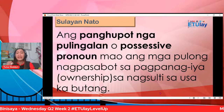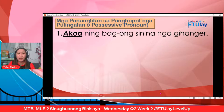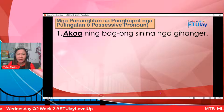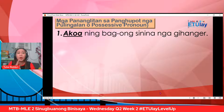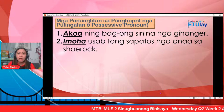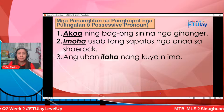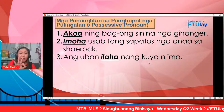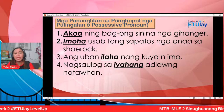Mga pananglitan sa panghupot nga pulingan o possessive pronoun: number one — ako aning bag-ong sinina nga gihanger — kanang gilinyahan, ako ah, kung sana ka pananglitan. Number two — imuha usab tong sapatos nga naa sa show rock. Imuha is an example o pananglitan sa panghupot nga pulingan o possessive pronoun. Ikatulo: ang uban, ilaha ng kuya nimo. Ang pulo nga ilaha — ikatulo nga pananglitan. Ikaupat: iyahang nagsaulog sa iyahang adlaong natawhan. Ang pulo nga iyahang, isa ka pananglitan. Ikalima: ato na kineng iro. Ang pulo nga ato is an example sa panghupot nga pulingan o possessive pronoun.